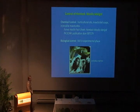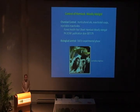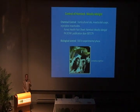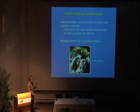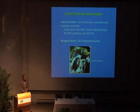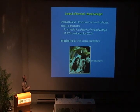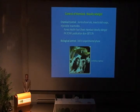Control of hemlock woolly adelgid is certainly possible. This is a surface-feeding insect, which makes it amenable to control by chemicals — insecticidal soaps and horticultural oils can be sprayed on a tree to knock back the population. You have to continue to do it roughly once a year to keep the population down. You can do that on individual trees you want to save, but obviously you can't do that on the whole forest. A good resource is the Forest Health Fact Sheet from the Pennsylvania DCNR — just Google DCNR with that document number.